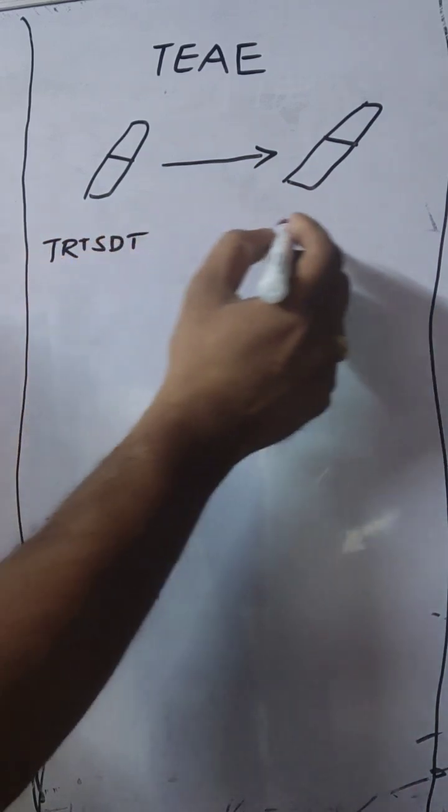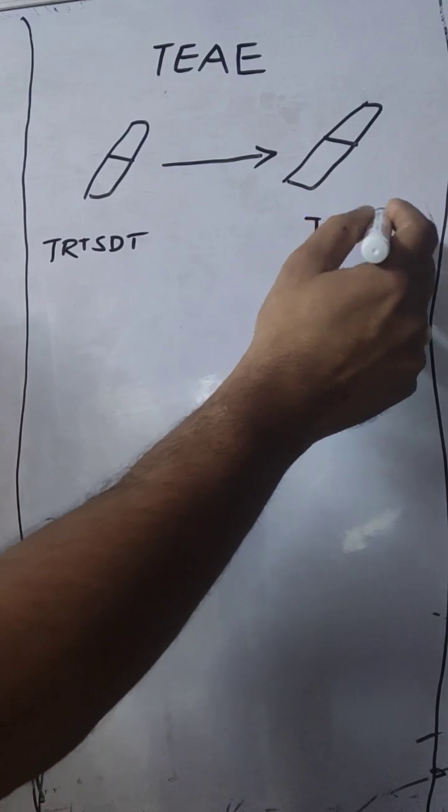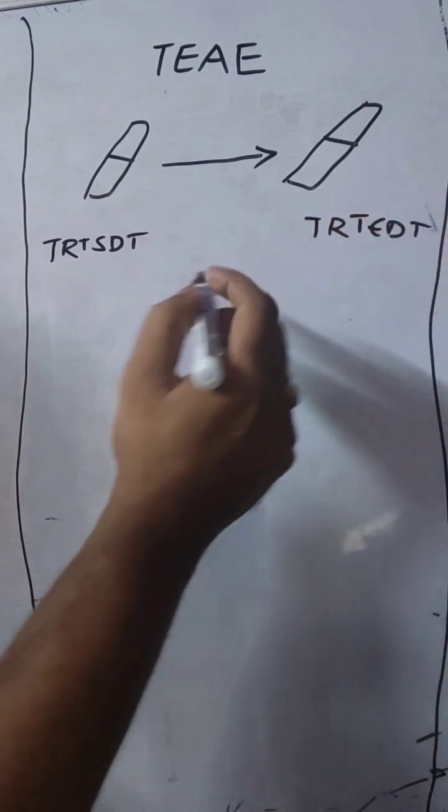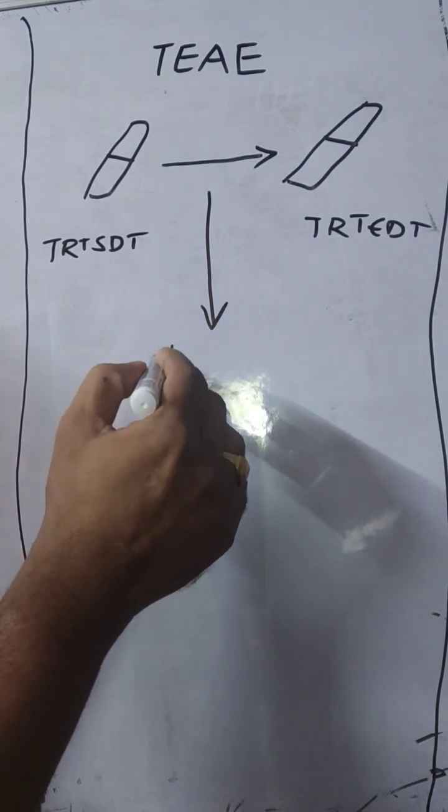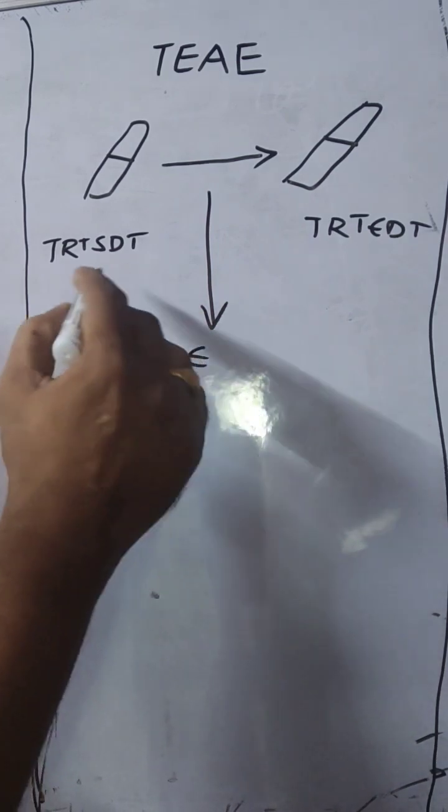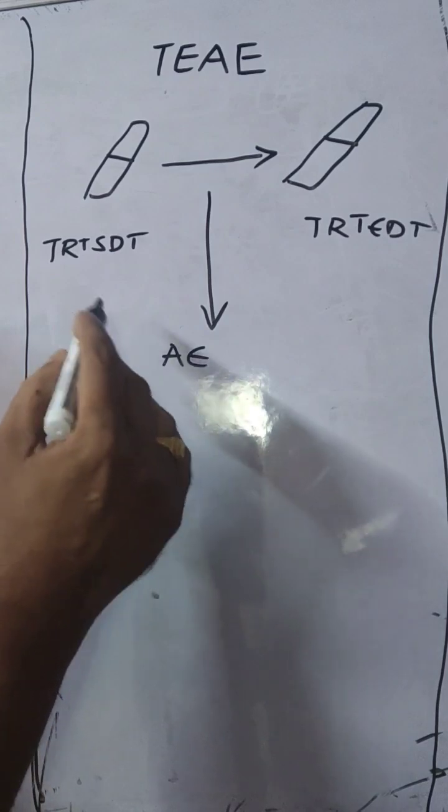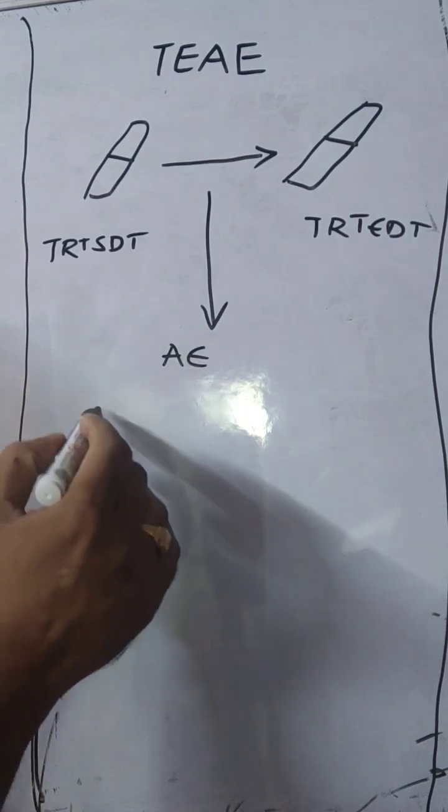From treatment start to treatment end - any adverse event that happens between treatment start to treatment end, we have to consider that adverse event as treatment emergent. Sometimes what happens is the adverse event is already there before the treatment.